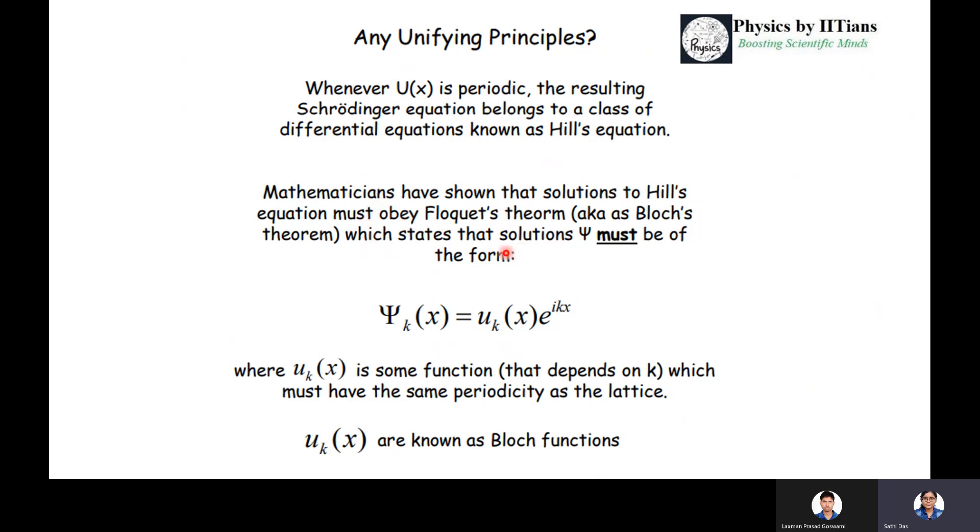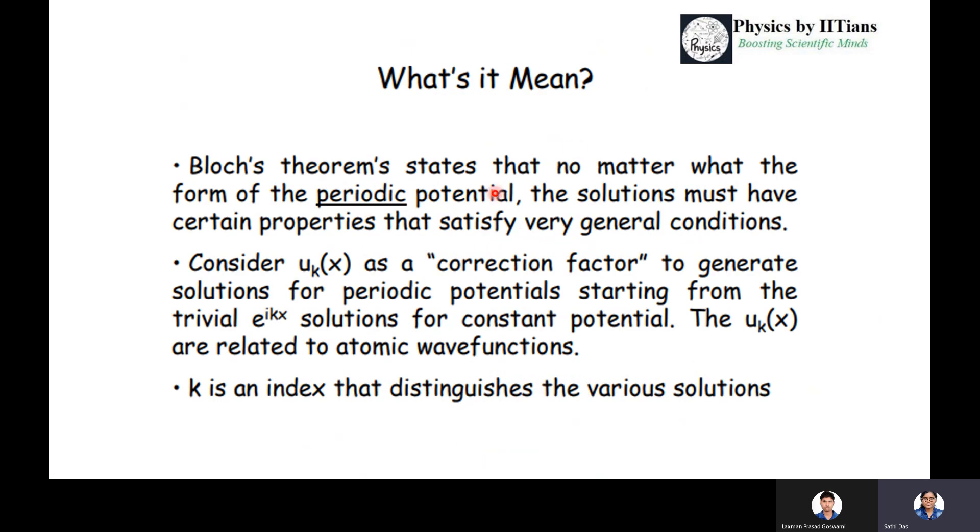So ψ also must obey Bloch's theorem, that is, ψ(x) equals u_k(x)e^(ikx), where u_k(x) is some function that depends on k and which must have the same periodicity as the lattice. This u_k(x) is also known as Bloch's function. Bloch's theorem means that no matter what the form of this periodic potential - whether rectangular shape or any other shape - the solutions must have certain properties that satisfy very general conditions.